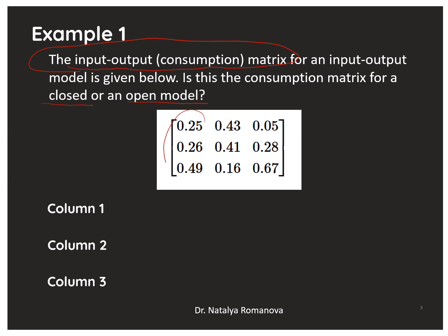The first column, sum 0.25 plus 0.26 plus 0.49 equals 1. The second column, sum of elements 0.43 plus 0.41 plus 0.16 equals 1.